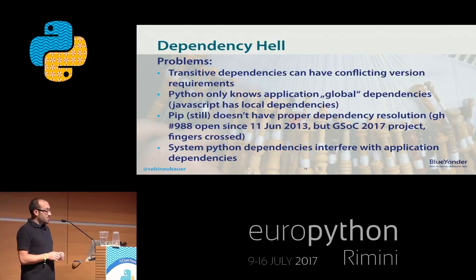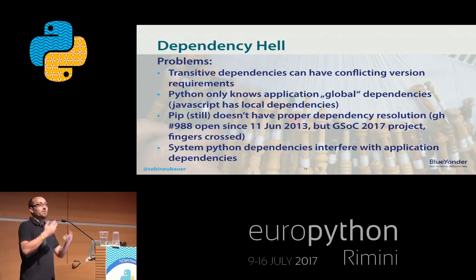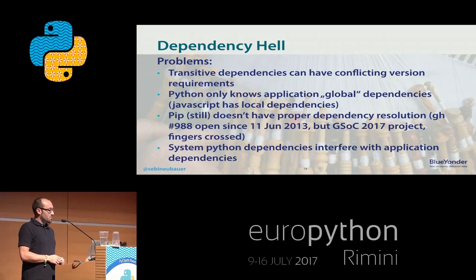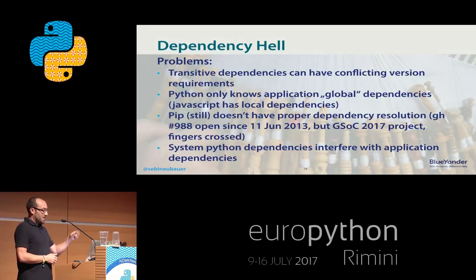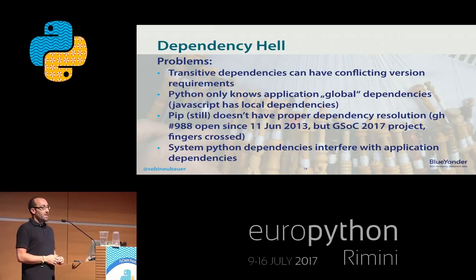Pip — that's a sad story. It still doesn't have a proper dependency resolution. All it does is take the first package that fulfills the first requirement. There is issue number 988, which is four years old. But the last comment there is that this year there's a Google Summer of Code project where a student gets paid to implement this in pip. Fingers crossed — maybe we'll have proper dependency resolution, as far as it can get, since we still have global dependencies and there are just unresolvable problems.